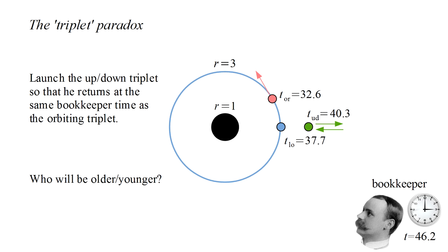The orbiting triplet aged the least, the up-down triplet the most, and the stationary triplet in between. The bookkeeper, who viewed the experiment from afar, measured a duration of 46.2 seconds.